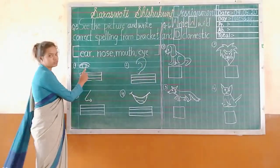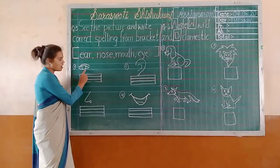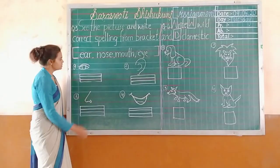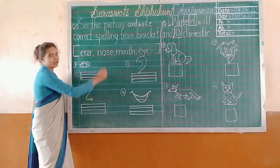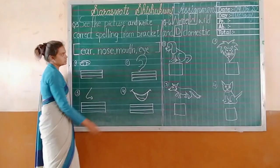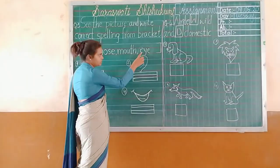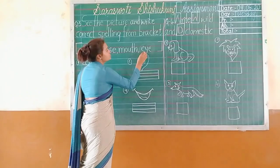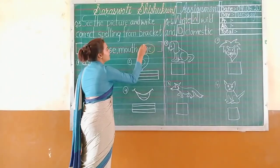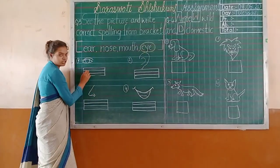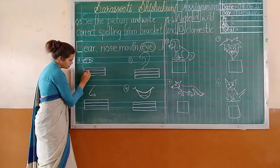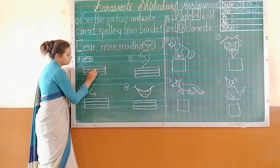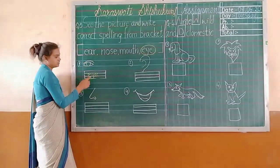See here, the first one — which body part is it? Eye. So where is the spelling of 'eye'? It is here: E-Y-E. So circle that spelling and write it in the picture. E-Y-E.